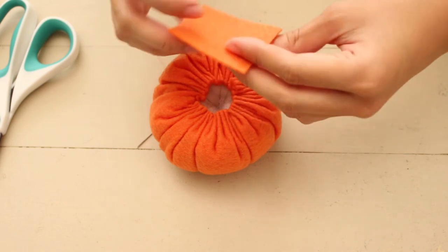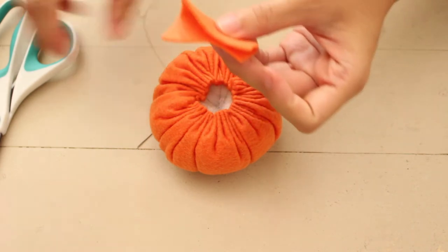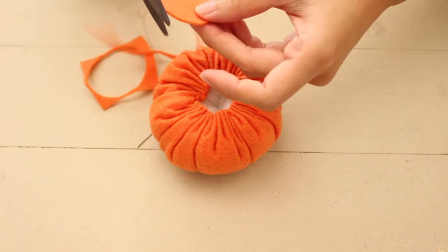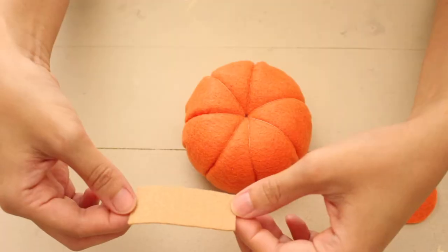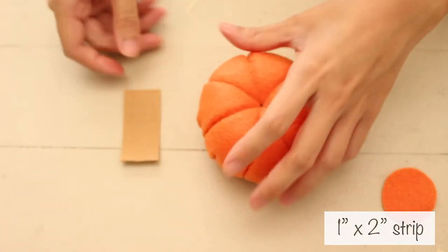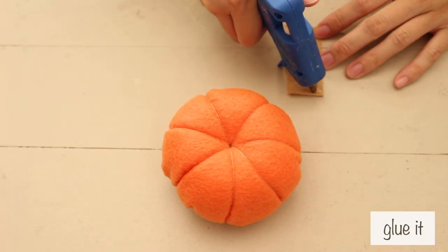Cut an orange circle big enough to cover the hole on the bottom. Next, cut a 1 by 2 inch tan strip. Add glue and roll it up.